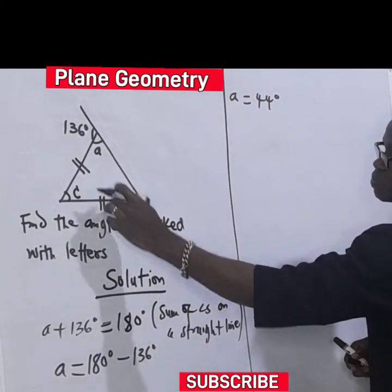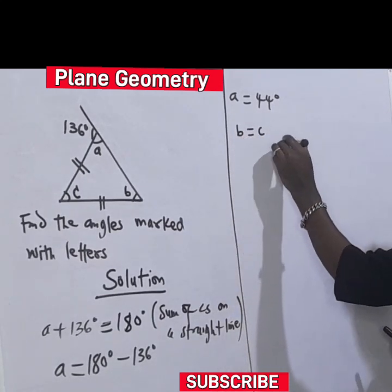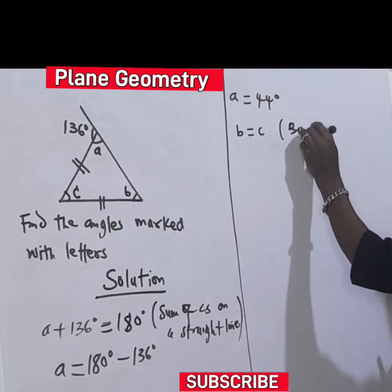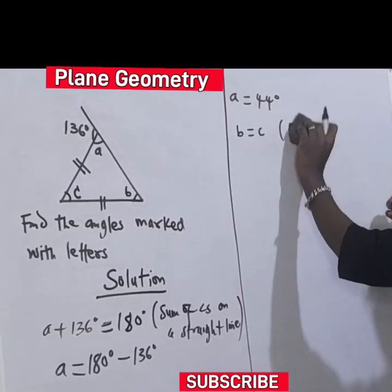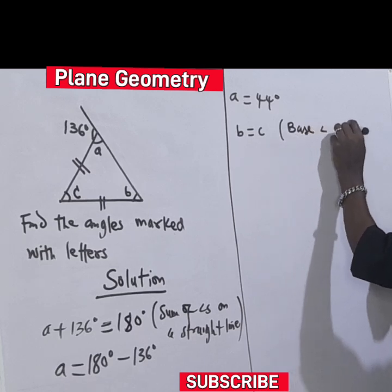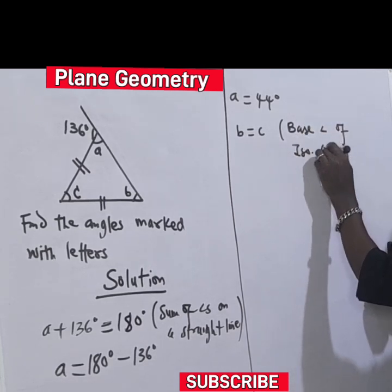Now this is a base angle, so we can see B is equal to C, or C equals to B, using base angles of an isosceles triangle.